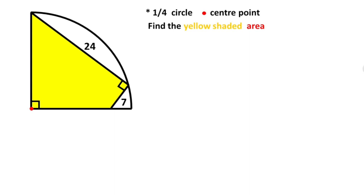First of all, if you draw a perpendicular onto the chord like this, we know that this chord must be divided into two equal parts. So these must each be equal to 12 units.